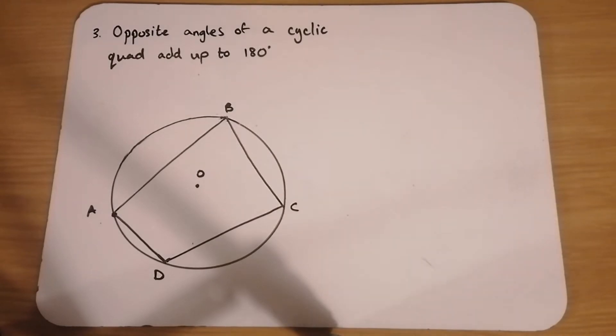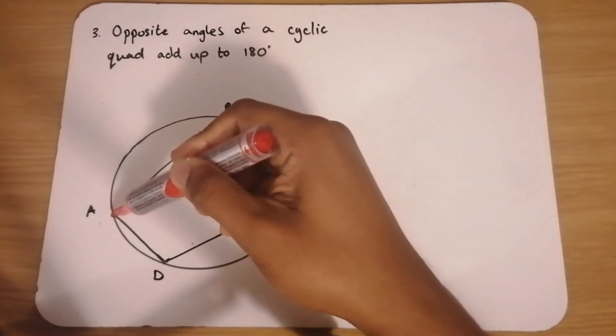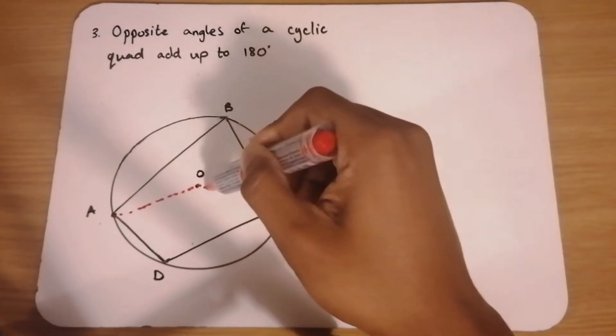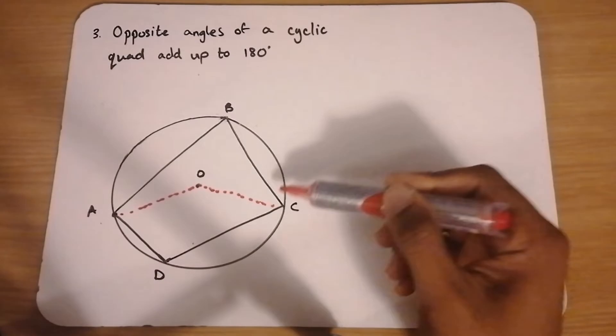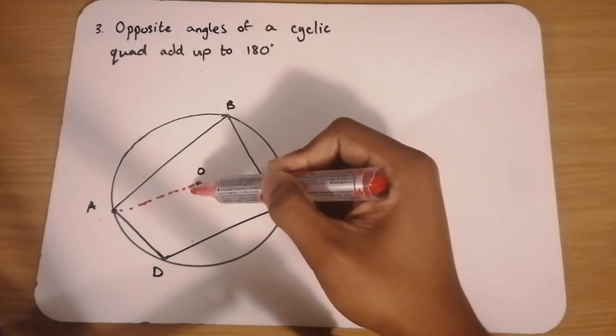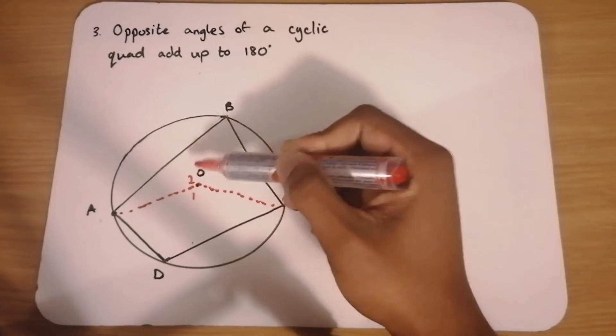So we'll start with our constructions as we always do. We'll construct radii again. We'll construct radii OA and OC. And again, just to make things easier, I'm going to call this angle O1 and angle O2.